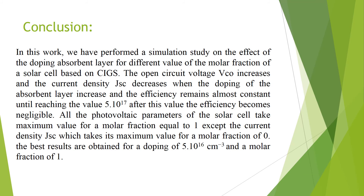From this graph, we notice the effect of doping of the absorber layer for different values of the molar fraction on a CIGS-based solar cell. The open circuit voltage increases and the current density decreases when the doping of the absorber layer increases. The efficiency remains almost constant until reaching 5×10^17, after which the efficiency becomes negligible. All photovoltaic parameters take maximum value for a molar fraction equal to 1, except the current density, which takes its maximum value for a molar fraction of 0. The best results are obtained for a doping of 5×10^16 and a molar fraction of 1.